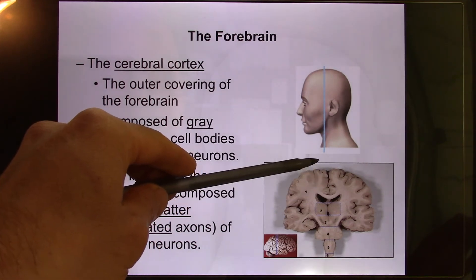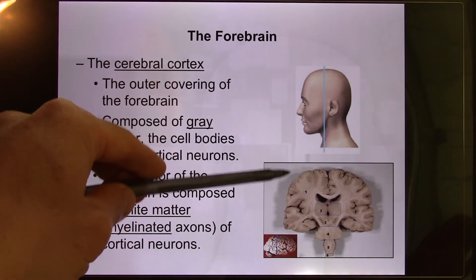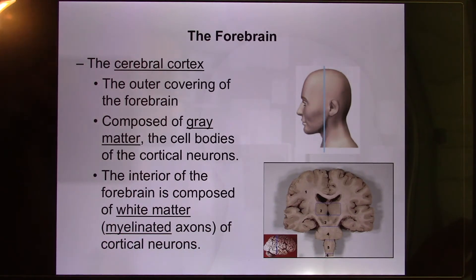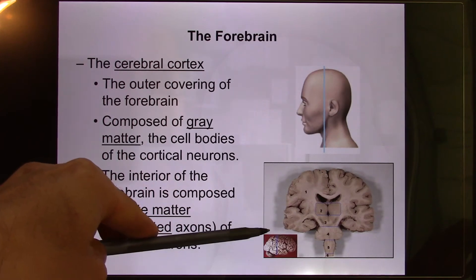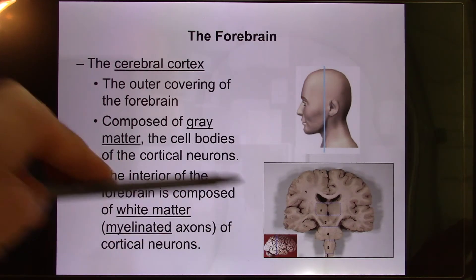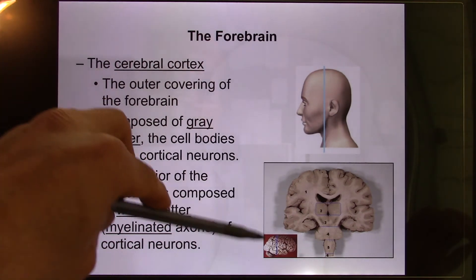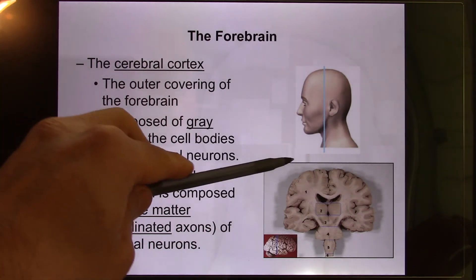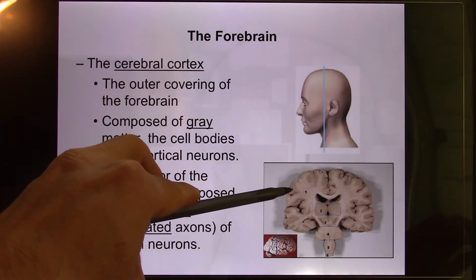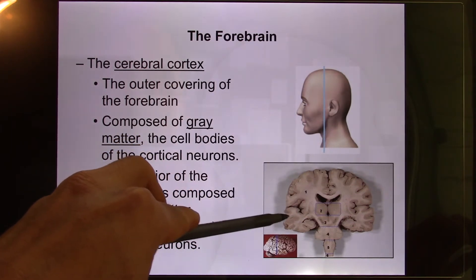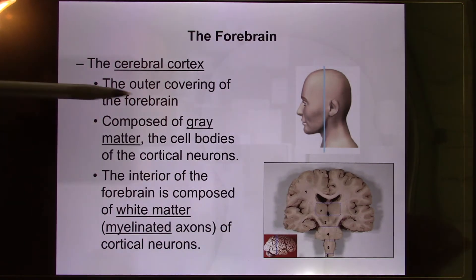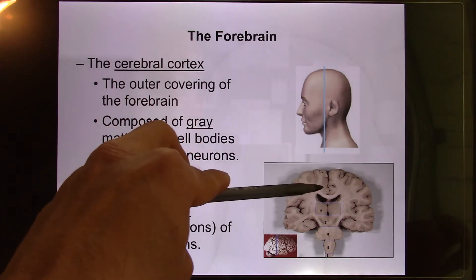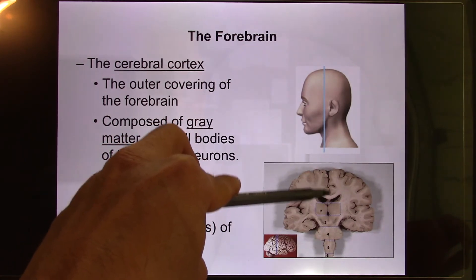So the cortex has sulci (inward folds) and gyri (outward folds), and the human brain is full of these wrinkles. The outside of the cortex is gray — gray matter — where the cell bodies and neurons are located. The inside is white — the myelinated axons. The corpus callosum, that white structure, is where the left brain and right brain connect, so when it's cut, they can no longer communicate.